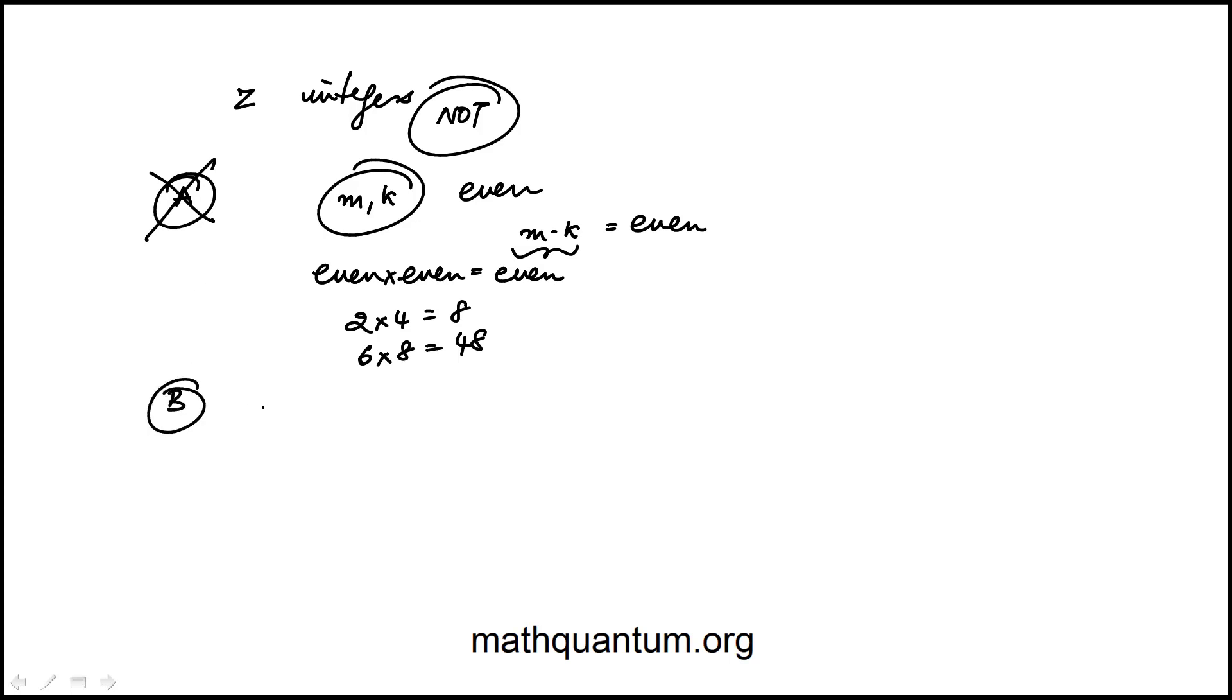Choice B is we're told that k is an integer and is odd, and k squared is even. Well when you multiply or square an odd integer the result is odd. So for example 3 squared is 9, 5 squared is 25, so on and so forth. So this is actually not true. This is not a true statement so that is the answer.